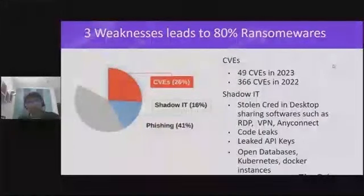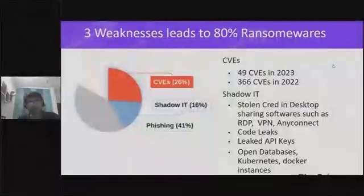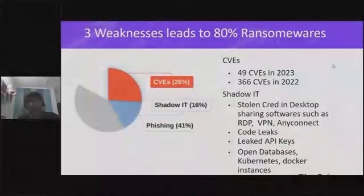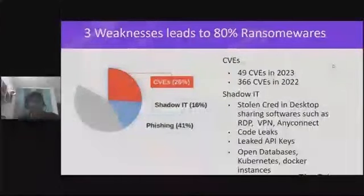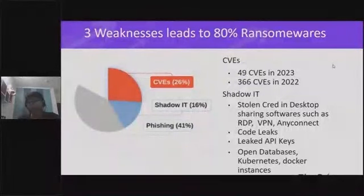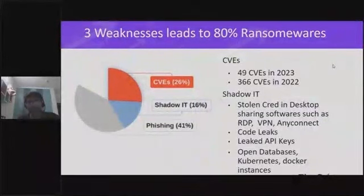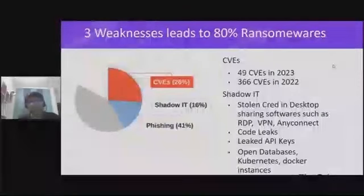Shadow IT cases also come from code leaks — developers writing open-source tools leave credentials and API keys in the code when they publish it. They can also leave credentials in software builds on CI/CD platforms such as Jenkins, CircleCI, or other similar tools.